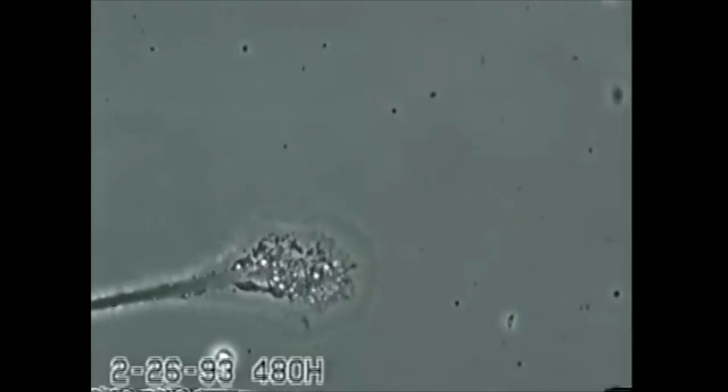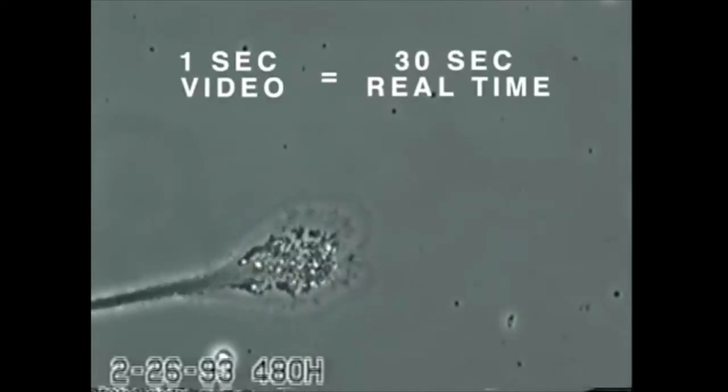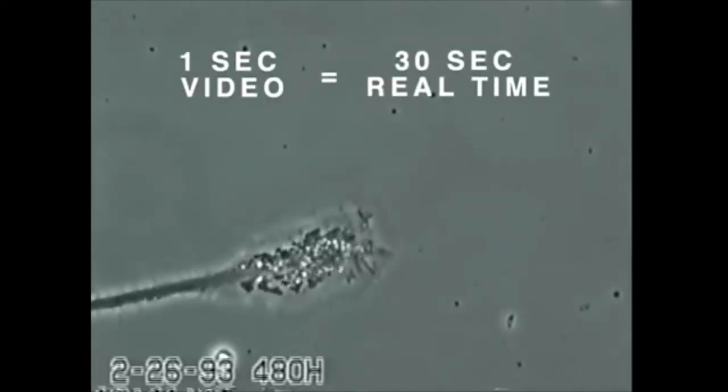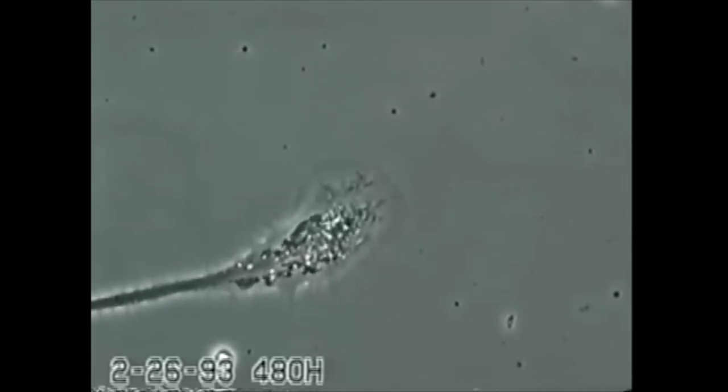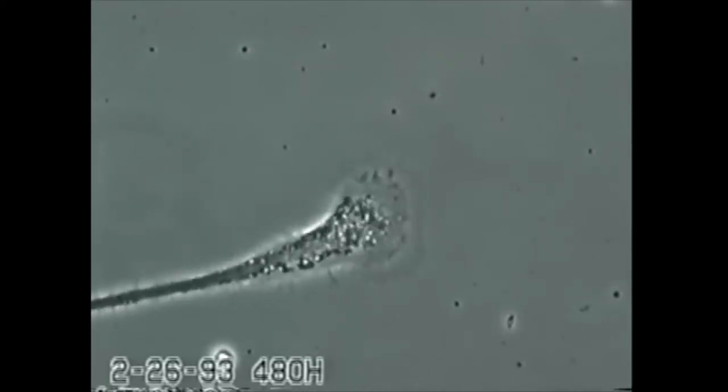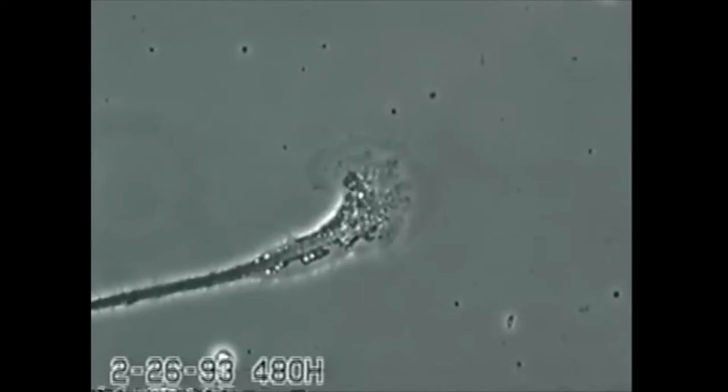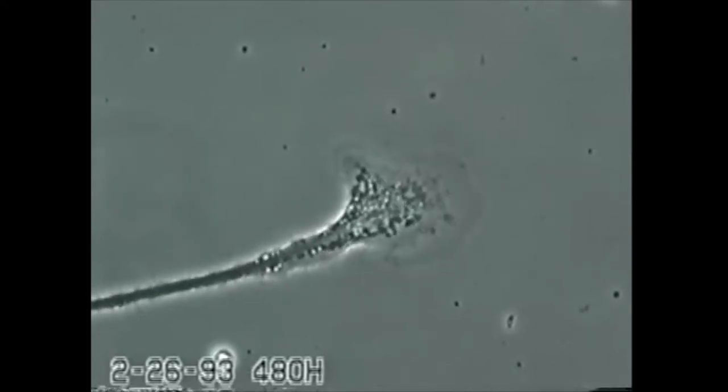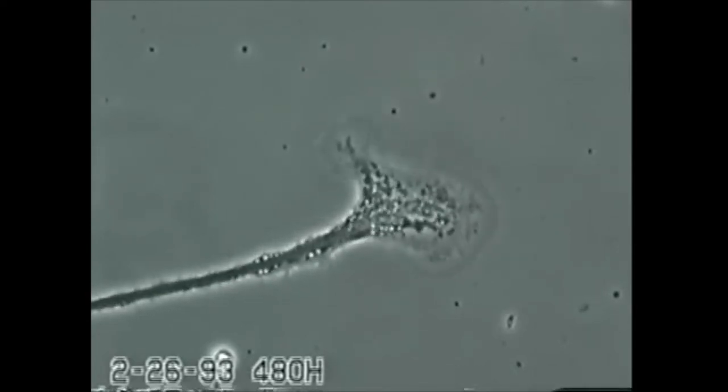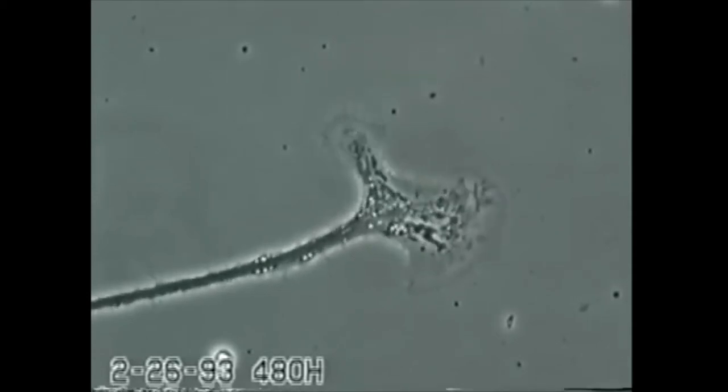Shown here is the neurite of a live neuron isolated from snail brain tissue displaying linear growth due to growth cone activity. It is important to note that growth cones in all animal species ranging from snails to humans have identical structural and behavioral characteristics and use proteins of virtually identical composition.